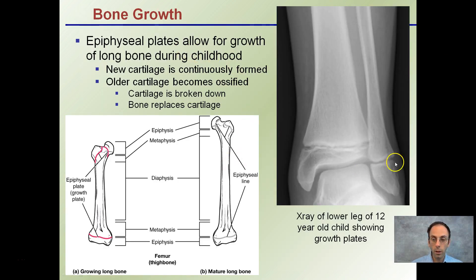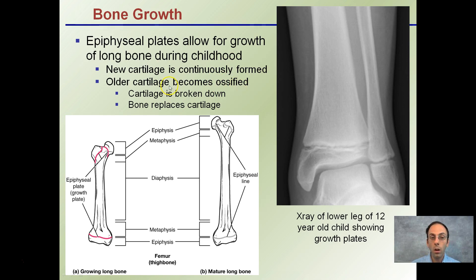Looking specifically at an x-ray of a 12-year-old child showing the growth plates — these epiphyseal plates are the regions that are actually growing. New cartilage is continuously formed, older cartilage becomes ossified, and cartilage is broken down as bone replaces it over time. This is a femur — our thigh bone, one of the longest of the long bones.